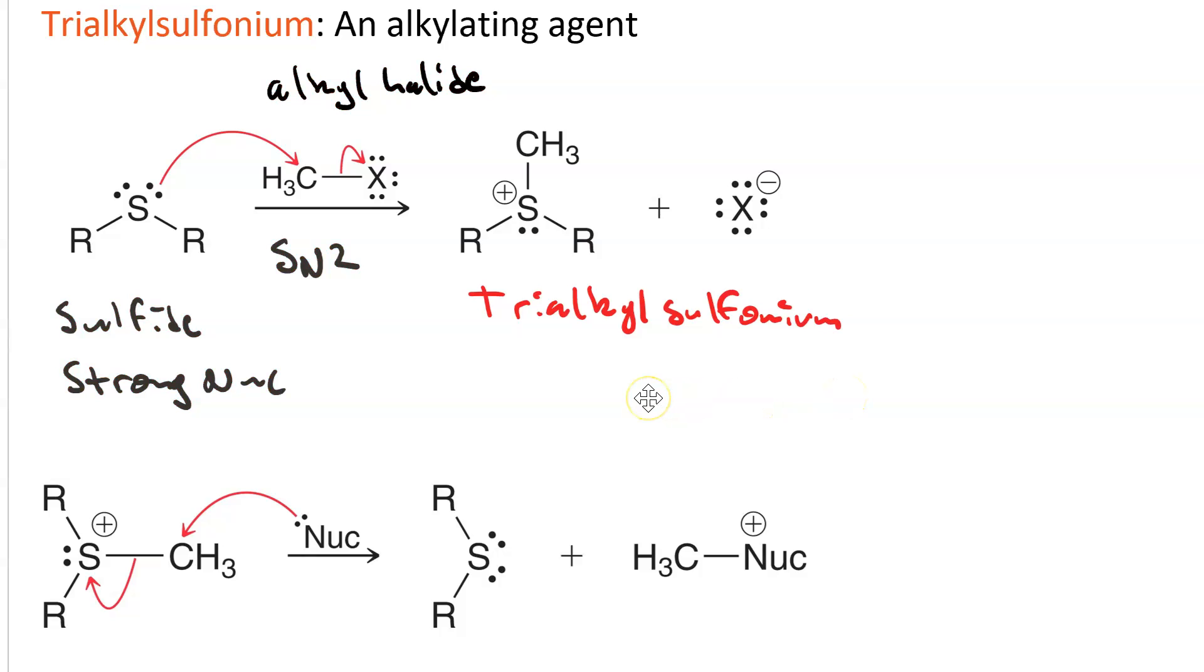If I then react my trialkyl sulfonium with a nucleophile, the nucleophile will attack the least bulky of the alkyl groups. And the sulfide will leave. So trialkyl sulfonium is a potent alkylating agent.